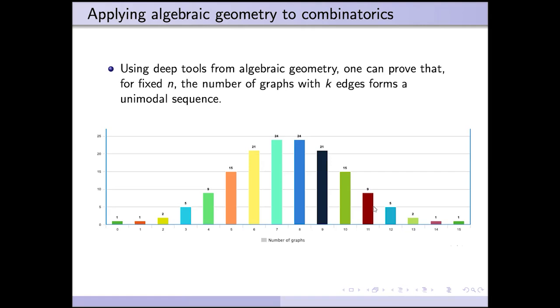For example, using algebraic geometry, one can show that if you fix the number of vertices, then the number of graphs with zero edges, one edge, two edges, and so on, form a unimodal sequence, meaning it goes up and then it goes down.